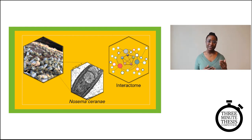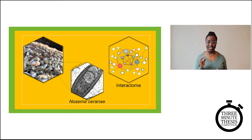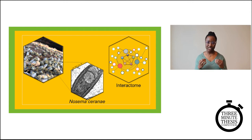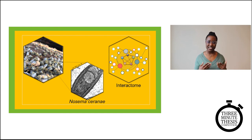So when a bee gets sick, this interactome gets disrupted, because whatever is making the bee sick is interfering with the protein interactions. To better understand how nosema infection changes the honeybee gut interactome, I first needed to know what that interactome looked like. So I decided to take a peek.